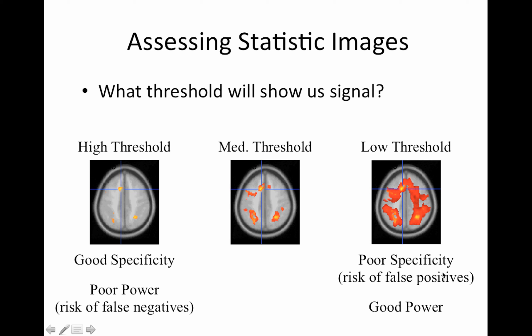On the other end of the spectrum with a low threshold, we have really poor specificity because now just about the entire brain is active. And our risk of false positives is now really high, but we have really good power. If something truly is active, we've probably found it. It's just mixed in with a lot of false positives. So somewhere in the middle is where we'd like to be, where we have this balance between power and false positive rates. But the focus here is in controlling the false positive rate, which becomes really difficult when you have 200,000 tests.